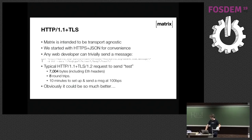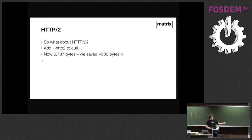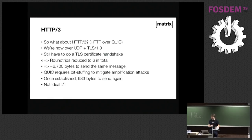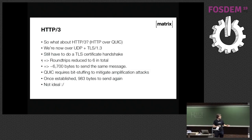Obviously it could be so much better. We tried adding HTTP/2 with curl, but we only saved a whole 300 bytes, because so much of this is still the TLS handshake. Next, we thought HTTP/3 — HTTP over QUIC — was the next big thing. We've killed TCP handshakes, we're on UDP, using TLS 1.3, and can do zero round-trip time setup.